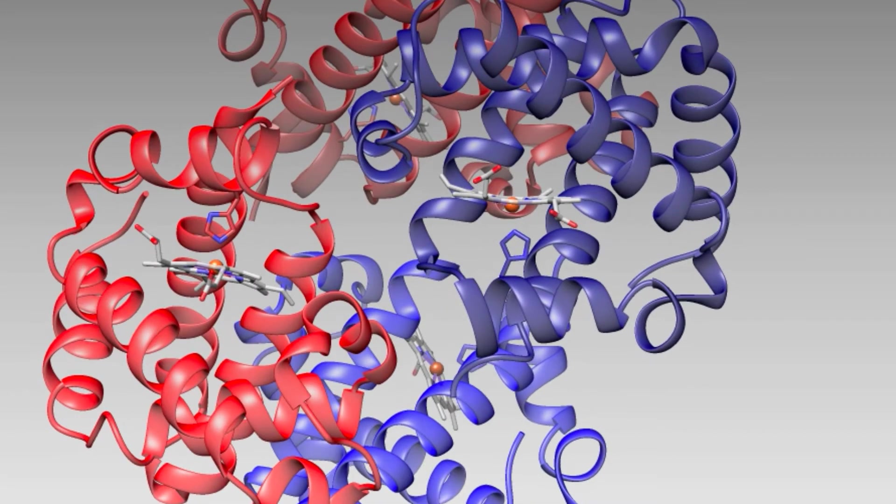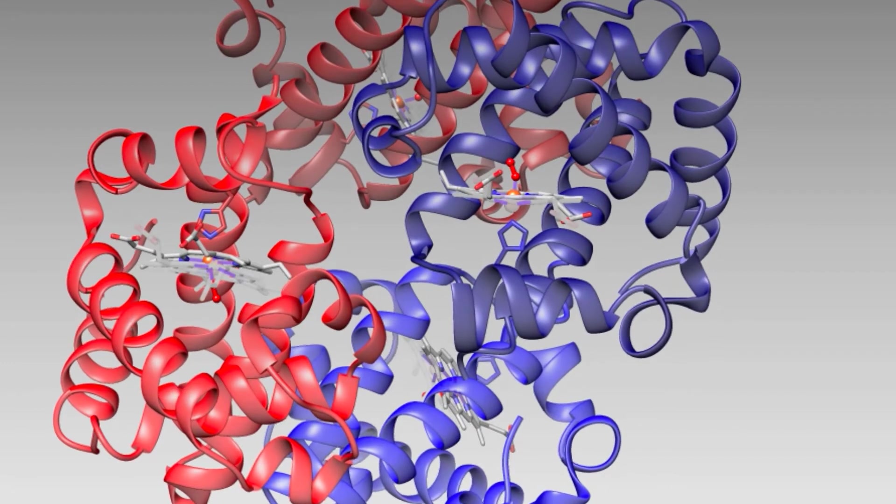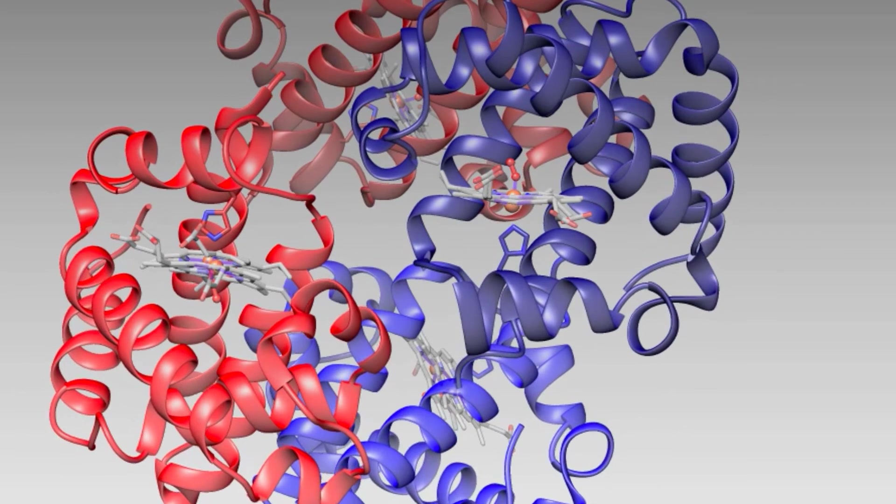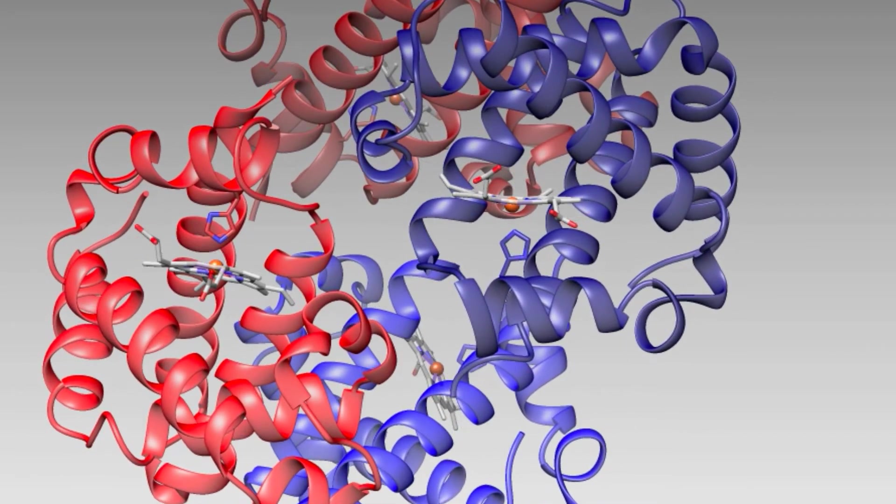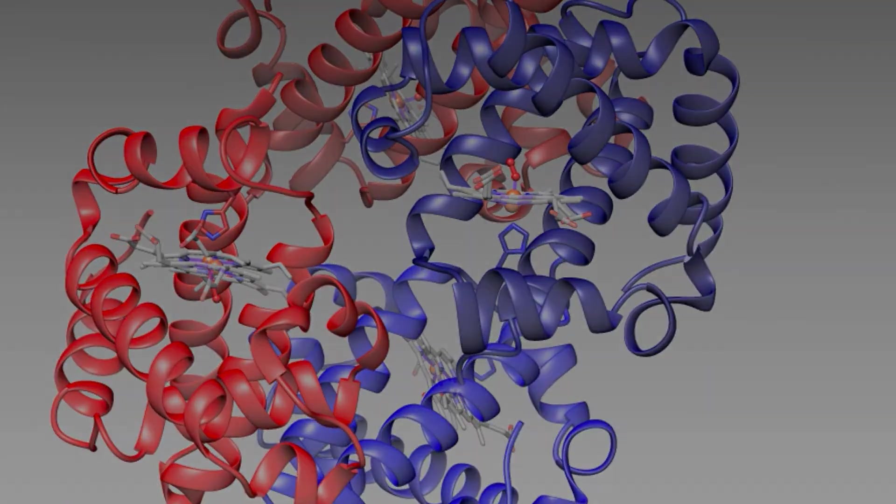When the first oxygen binds to hemoglobin, the slight structural shift that occurs with dioxygen binding results in the increased oxygen affinity of the other three subunits, allowing hemoglobin to more easily bind to the additional oxygen molecules.